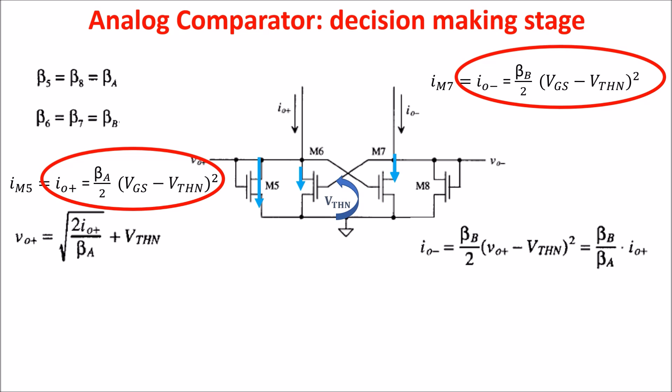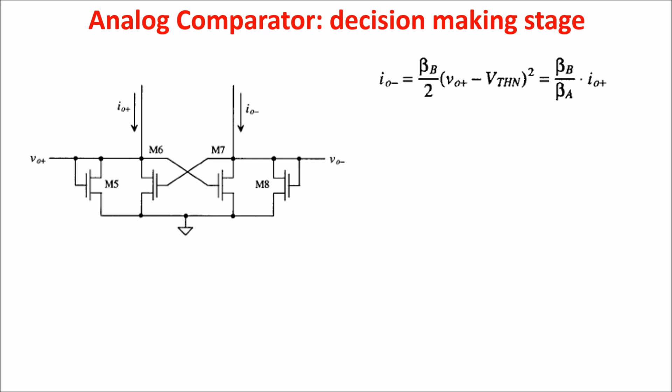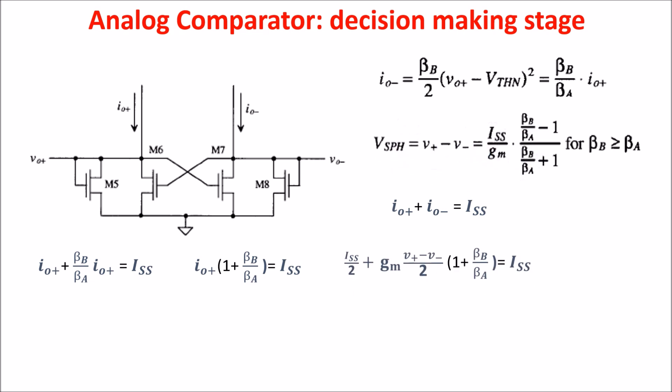In order to find the hysteresis voltage VSPH, we remember IO plus as function of the differential input, and we remember that in the differential amplifier, the sum of the currents in the two branches is always equal to the tail current ISS. From these equations, we get this, which we can rewrite in this way, and so in this. From this last equation, we obtain the VSPH value, and so the VSPL. So depending on the noise of the input signal, we get the hysteresis threshold to get a clear output.